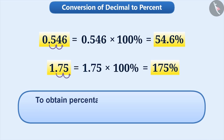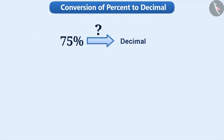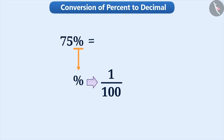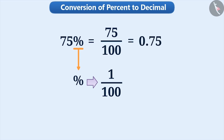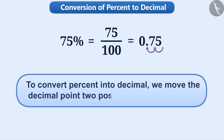In general, to obtain the percentage of any decimal number, move the decimal point two positions towards the right. To convert percentage into decimal, we write 1 by 100 in place of the percent sign — that means we divide the percent by 100. For example, 75% equals 75 by 100, which equals 0.75. In general, to convert percent into decimal, move the decimal point two positions towards the left.